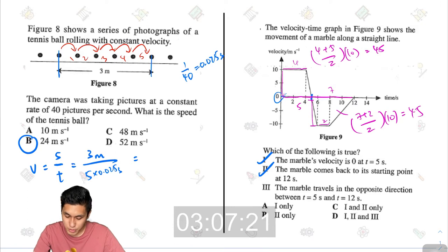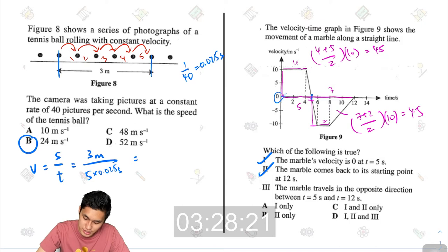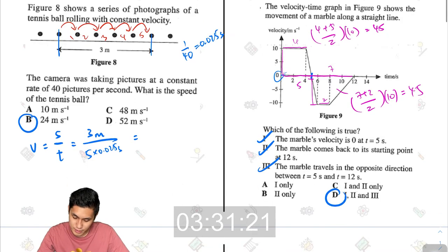Last one, the marble travels in the opposite direction between t equals 5 and t equals 12. So t equals 5 is here, and t equals 12 is here. Opposite direction, I would assume, is opposite to whatever the initial direction is. Because it is a negative velocity, that means it is the opposite direction. So yes, all three are correct, answer d.